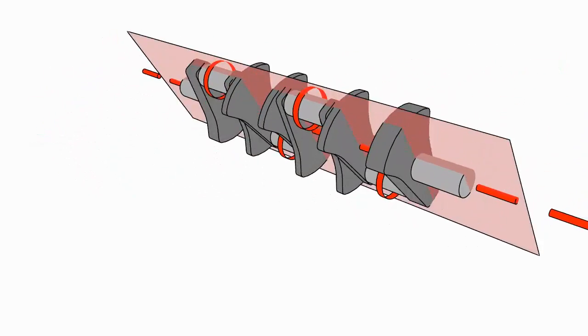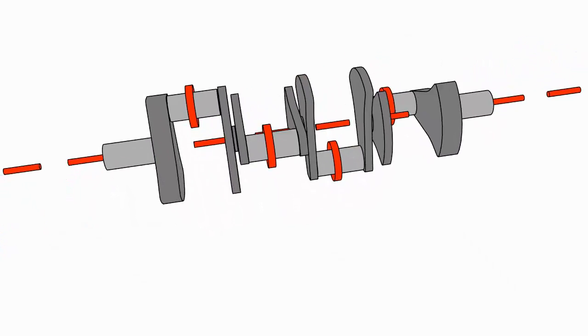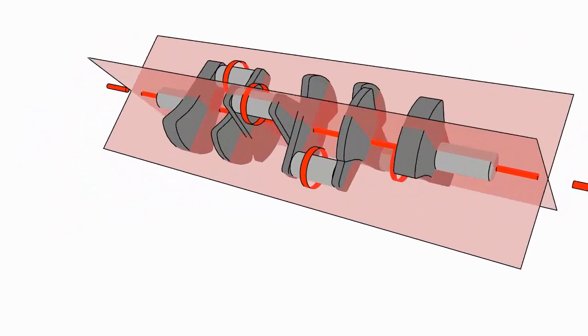By contrast, a cross plane crank has its crank pin journals every 90 degrees, so you'd need two two-dimensional planes that were perpendicular to each other in order to cross through those center points, hence the name cross plane crank.